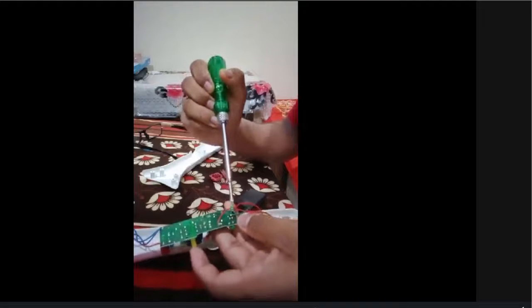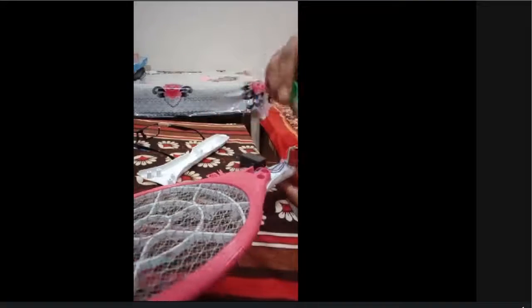We have two LED bulbs, which are used to indicate whether the flyswatter is working or whether it is charging. The red LED bulb is used to indicate that it is working. And this green LED bulb is used to indicate that it is charging. Coming to the mesh section, we have three meshes over here. One is at the top, one is at the bottom and the third one is in the middle of these two.